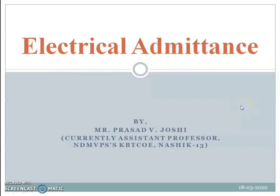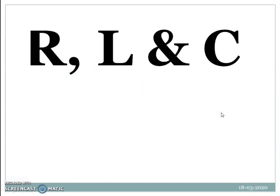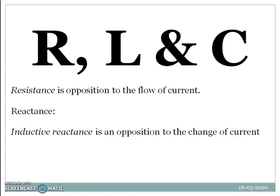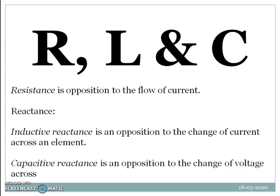Today we are going to understand the concept of electrical admittance. Before understanding admittance, let's understand the basic components in electrical engineering and what is impedance. R, L, and C are three basic components where resistance is opposition to the flow of current. Reactance is of two types: inductive reactance and capacitive reactance. Inductive reactance opposes change in current whereas capacitive reactance opposes change in voltage.